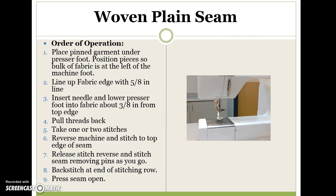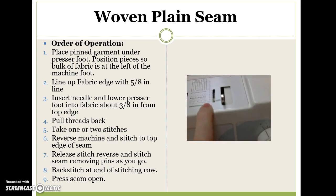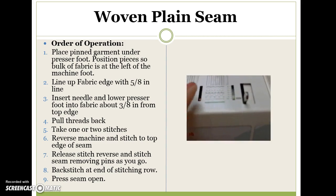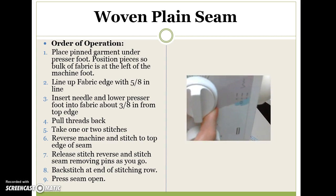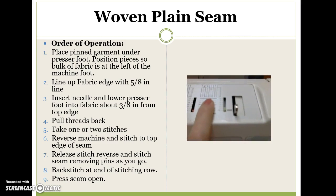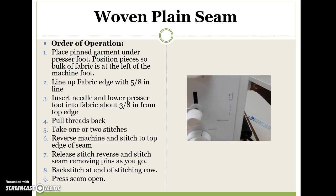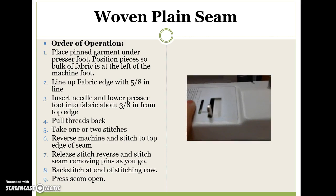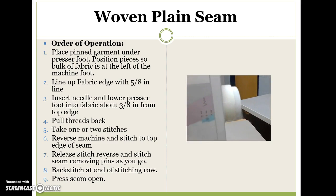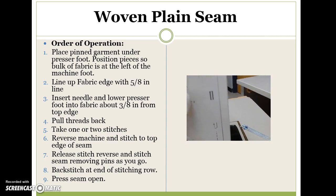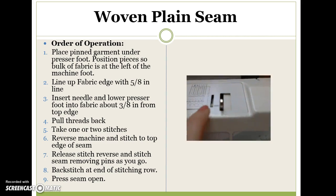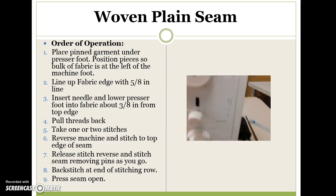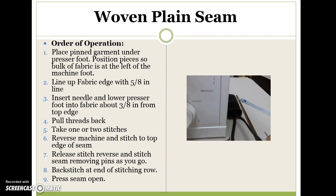Before sewing your plain seam, double check that you have the correct settings on your machine. We are using seam number one. The stitch width should be at zero, and the stitch length should be at two — you can do between two and two and a half depending on how tight your machine works. The needle position should be at the middle. The buttonhole setting should be at zero since we are not creating a buttonhole. We are using the green stitch selector, not the red, and make sure the selector is set to sewing, not darning.